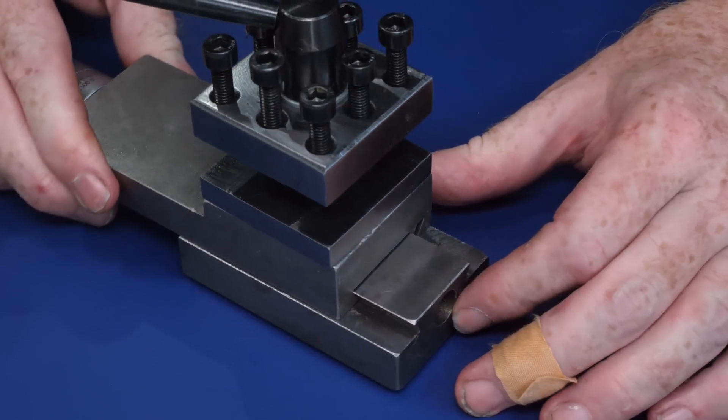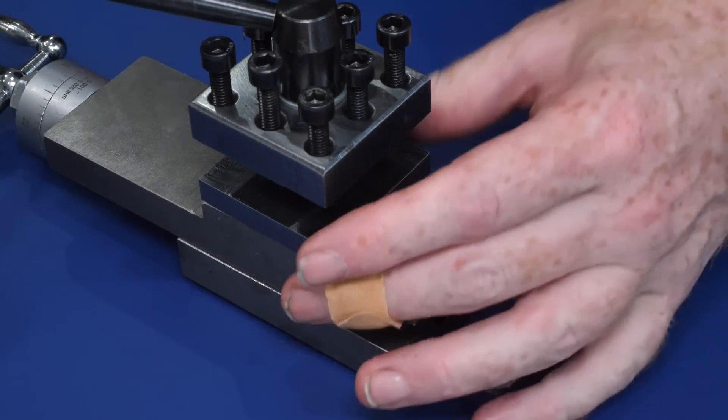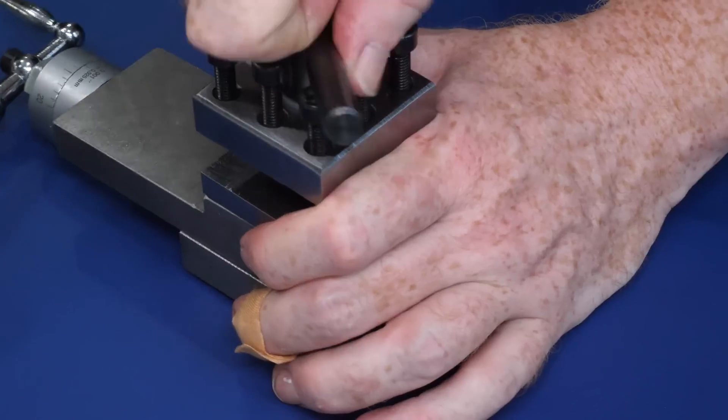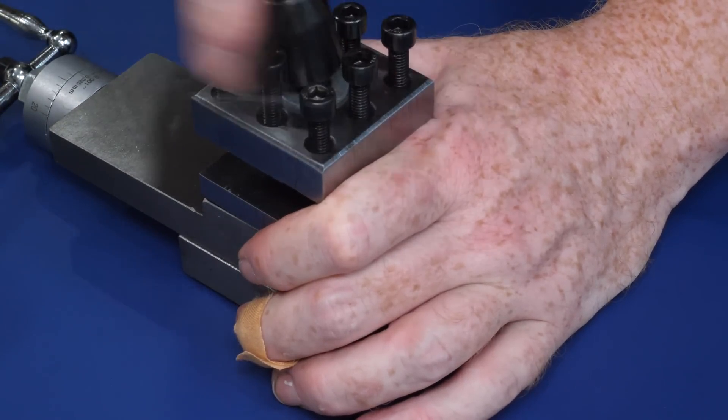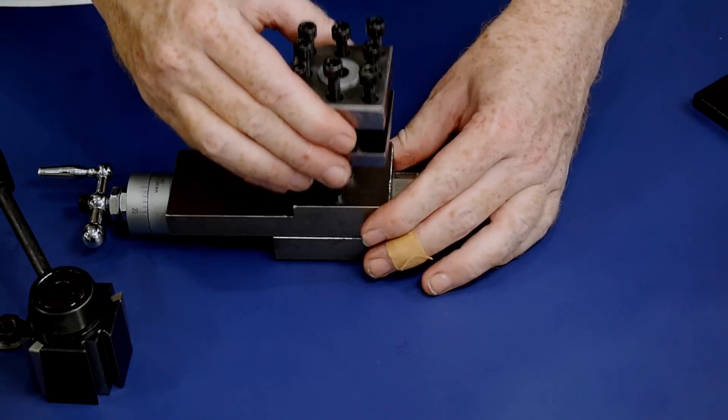The lathe was delivered with this fixed height tool post fitted to the compound. This style of tool post is rigid, but requires shims to adjust the tool height, and is very slow to change tools beyond the four that can be installed at the same time.